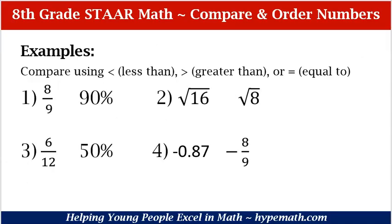Compare using less than, greater than, or equal to. Number 1: 8 ninths compared to 90%. Number 2: the square root of 16 and the square root of 8. Number 3: 6 twelfths compared to 50%. And number 4: negative 0.87 and negative 8 ninths.